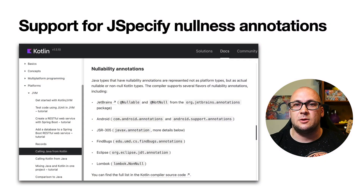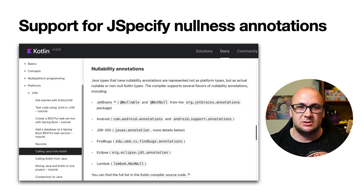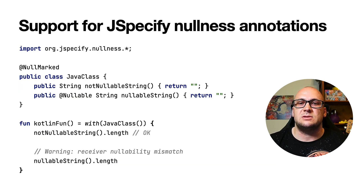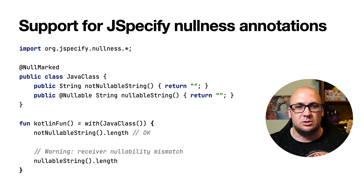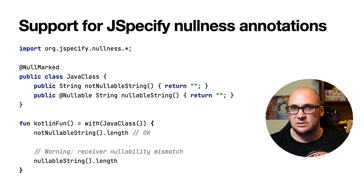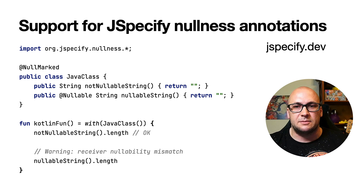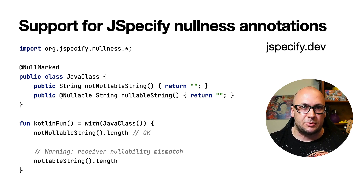The Kotlin compiler can read various types of nullability annotations to pass nullability information from Java to Kotlin. The new version introduces support for the JSpecify project, which includes a standard unified set of Java nullness annotations. With JSpecify, you can provide more detailed nullability information to keep Kotlin's null safety when interoperating with Java.